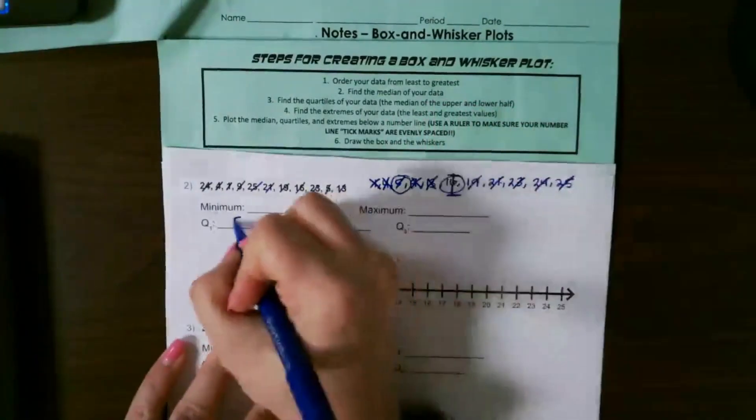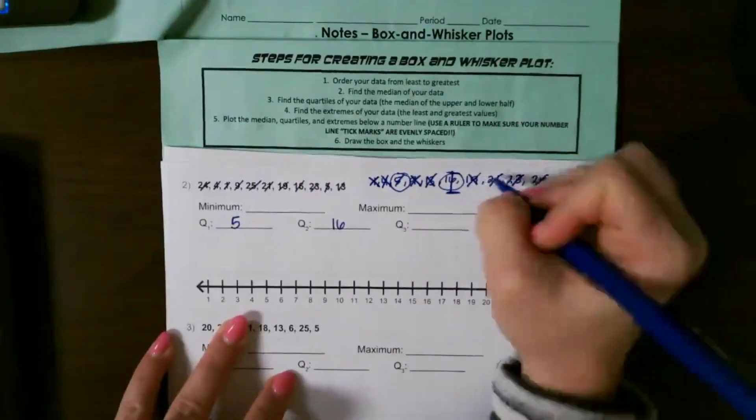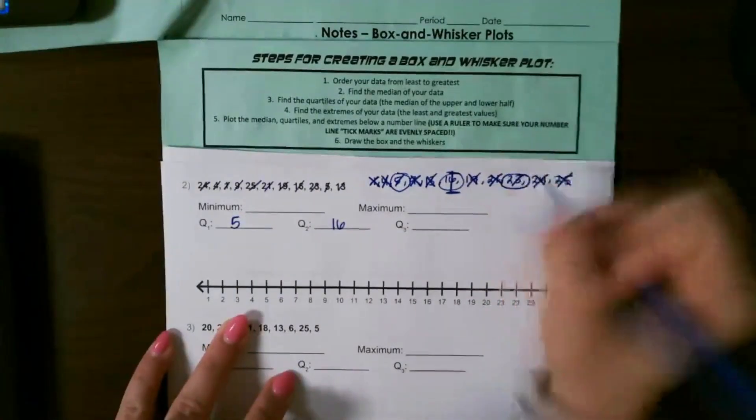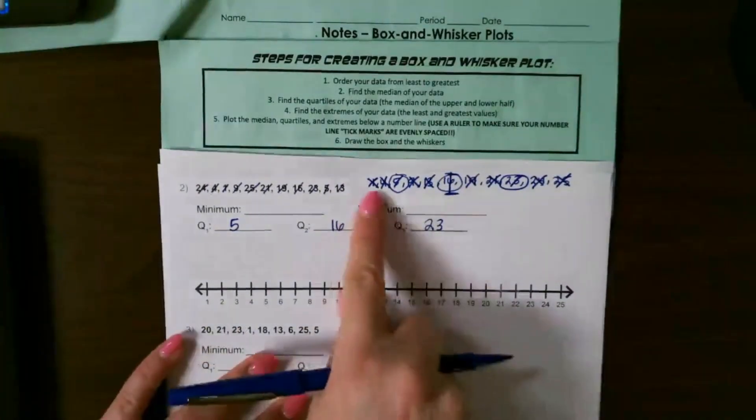Then I want to find the median of the upper half of our data, which is going to be 23, and that will be our Q3. Your minimum is simply the smallest number in your set and the maximum is the largest.